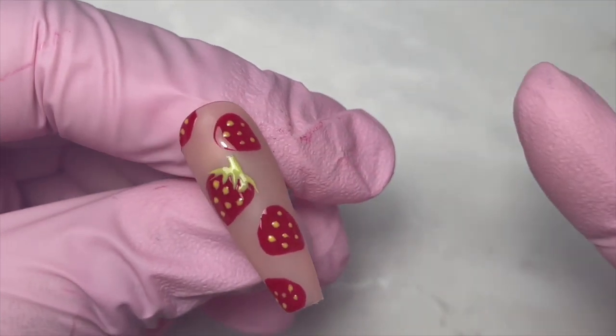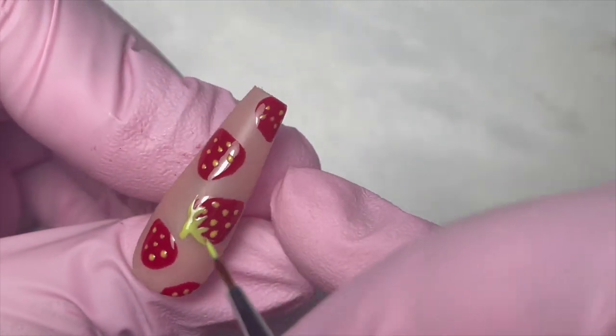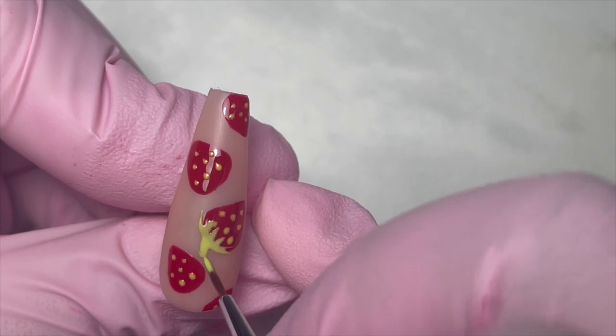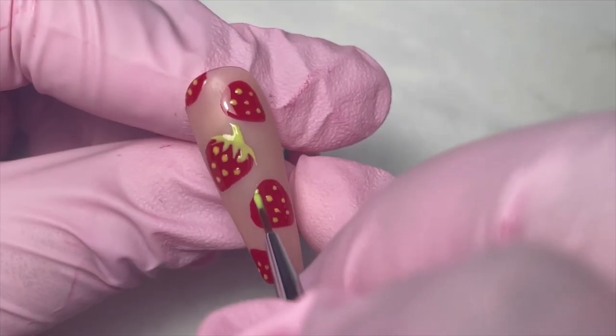I will then go in with another small dotting tool, put some white dots around the nail, and then I would flick them out to create a nice little star shape, and it really tied it together.